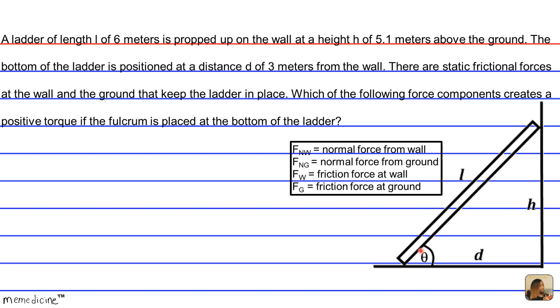So the answer choices are A, F sub NW sine of theta, B, F sub NG cosine of theta, C, W, that's the weight, times the cosine of theta, or F sub W sine of theta. And the theta refers to this angle of inclination right here.